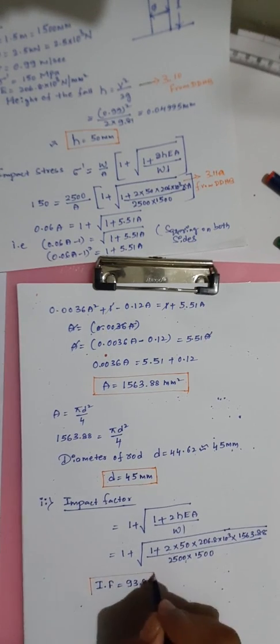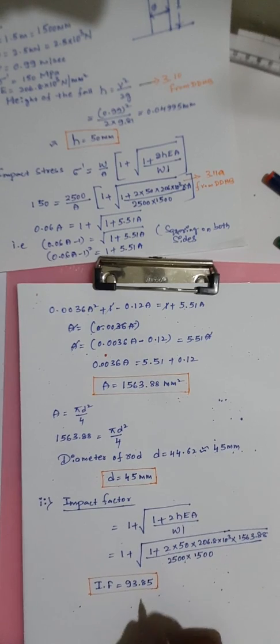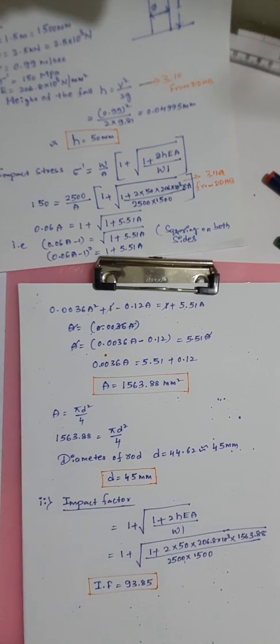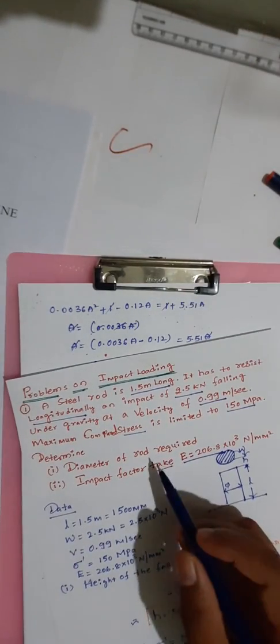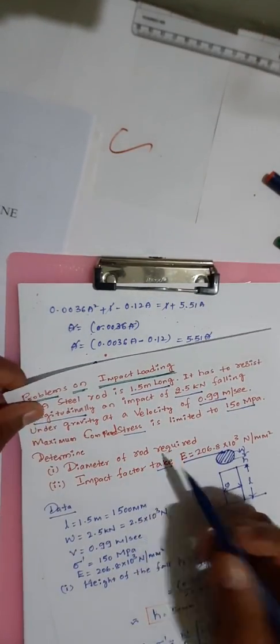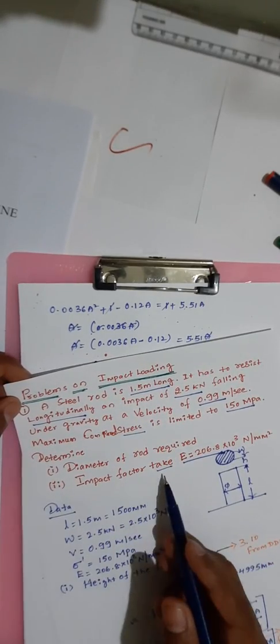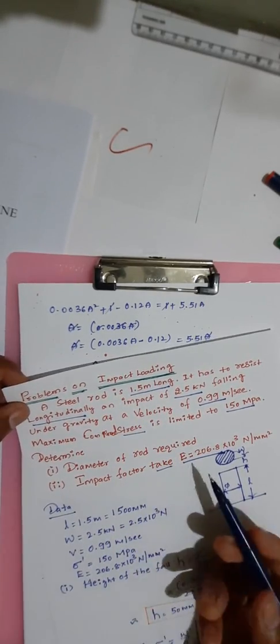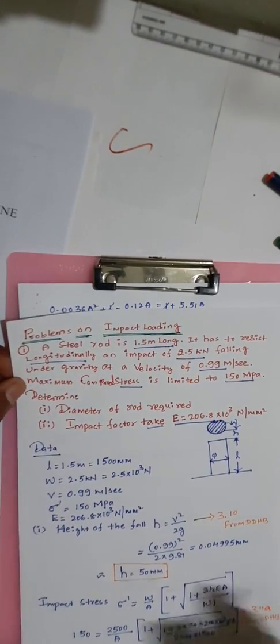This is the given problem with respect to the impact loading condition. We found the diameter of the steel rod required to be approximately 45 mm and the impact factor to be 93.85, using the given data for this impact load problem.